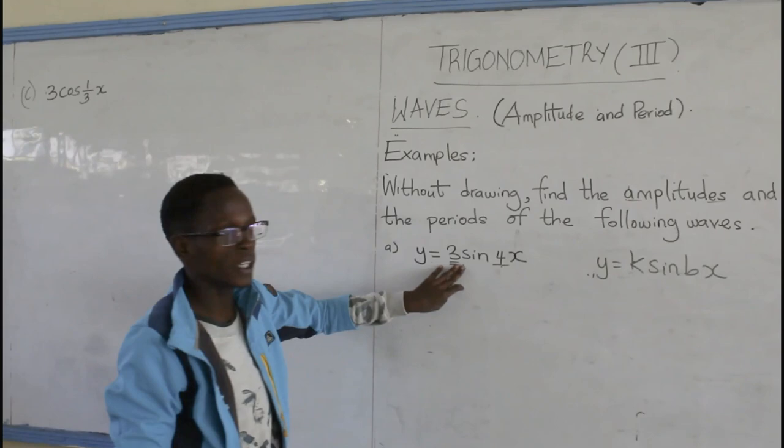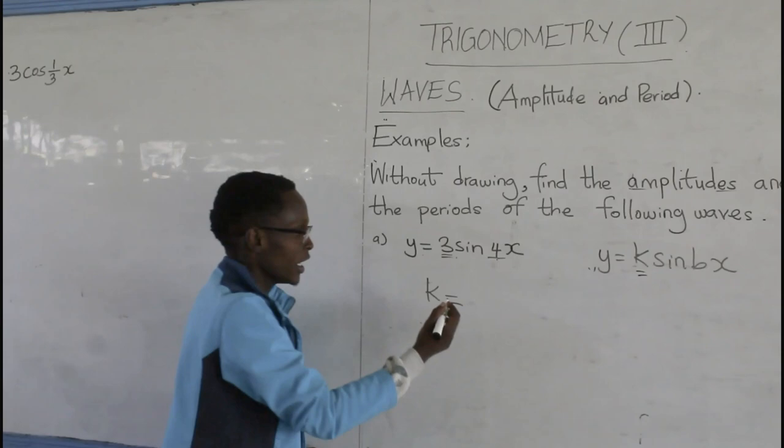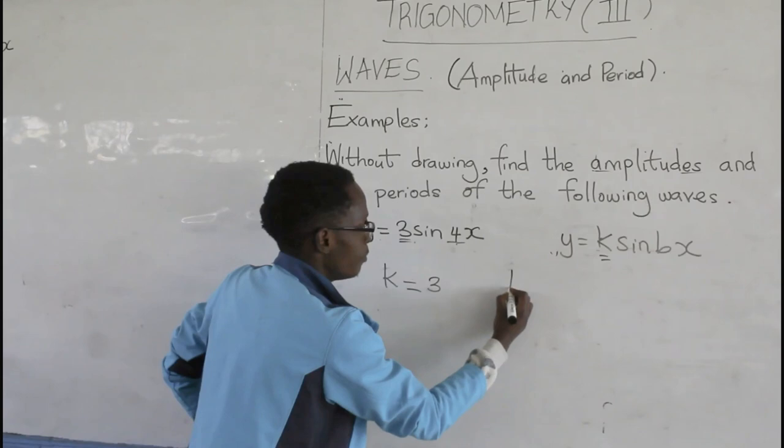So, from this, what is the value of K? The value of K from this equation equals to 3. What is the value of B? The value of B equals to 4.